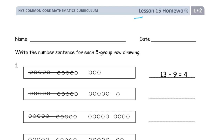Welcome to the homework for lesson 15. This is module 2 of grade 1. Write your name first. We're writing a number sentence that goes with five group row drawings.